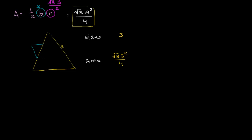So if we do this on all three sides, we have 4 times 3, which is now 12 sides. Multiplying the previous count by 4 gives us 12 sides. We can count them out to verify: 1, 2, 3, 4, 5, 6, 7, 8, 9, 10, 11, 12 sides.